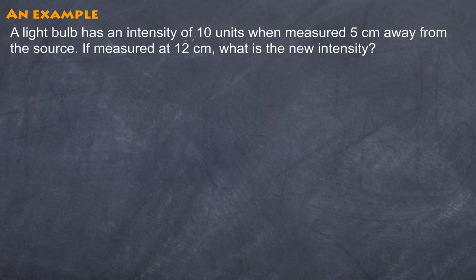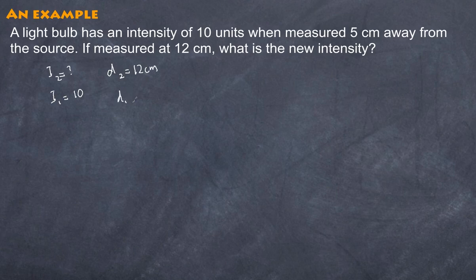A light bulb is receiving at a certain distance an intensity of 10 units, when measured at 5 centimetres from the source. If measured again at 12 centimetres, what is its new intensity? Well, what we first do is write down the variables we know and don't know. So intensity 2 is the thing we're looking for, whereas intensity 1 is the value of 10. Distance 2, in this case, is 12 centimetres, whereas distance 1 is equal to 5 centimetres.